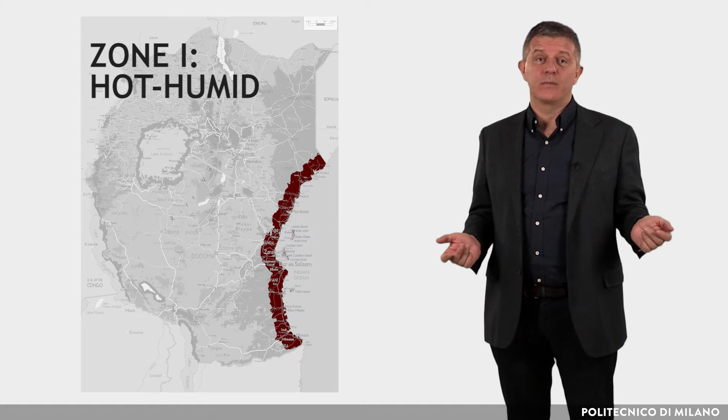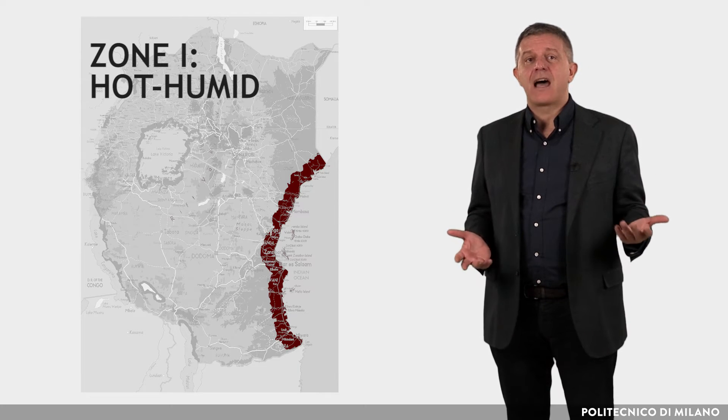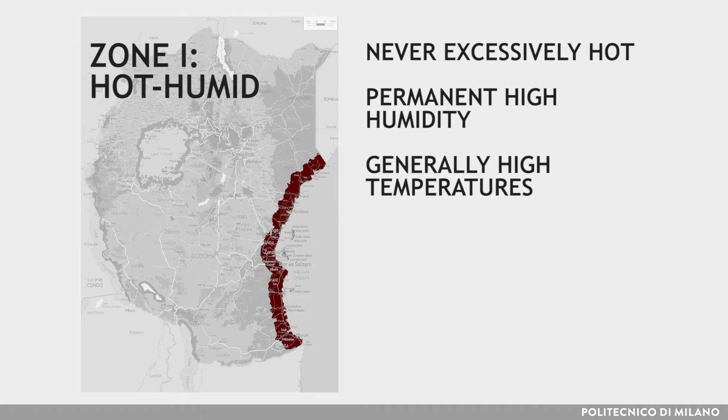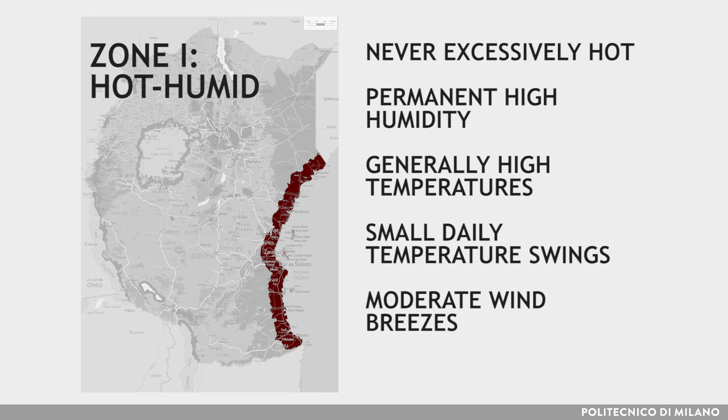Zone 1, hot-humid. Main climatic features are never excessively hot, permanent high humidity, generally high temperatures, small daily temperature swings, moderate wind breezes, and high solar radiation values.